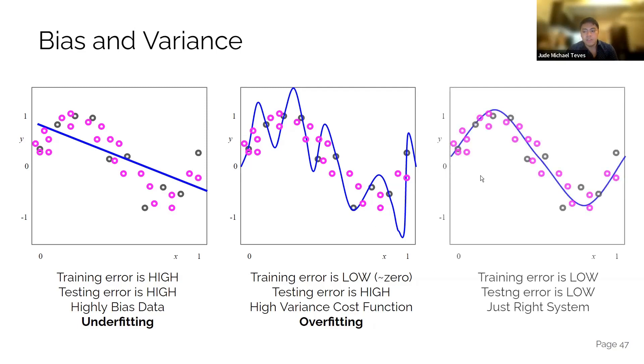This one is a good model. Training error is low, not that perfect, but good enough. And then testing error is low. This is just okay. So that's bias and variance.